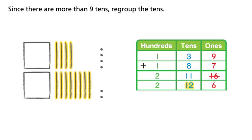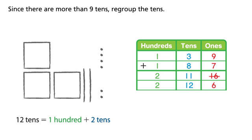Since there are more than 9 tens, regroup the tens. 12 tens equals 100 plus 2 tens.